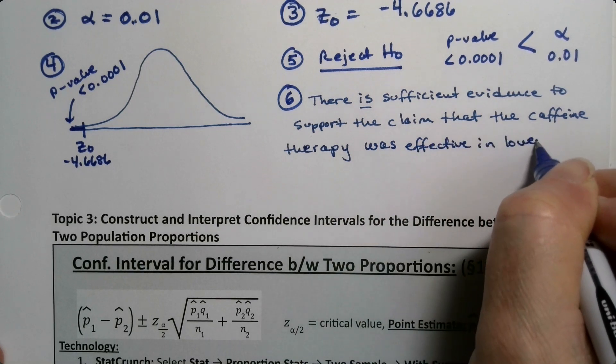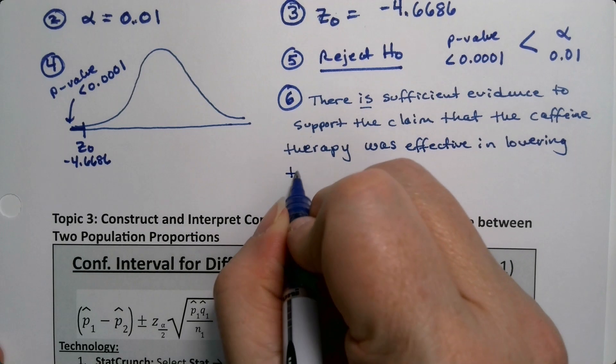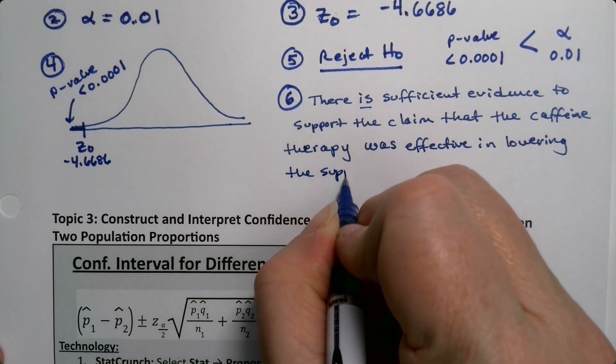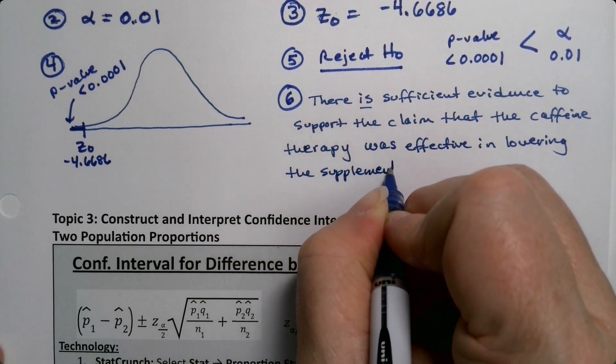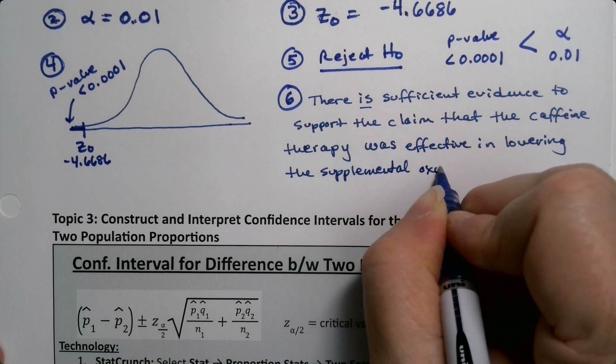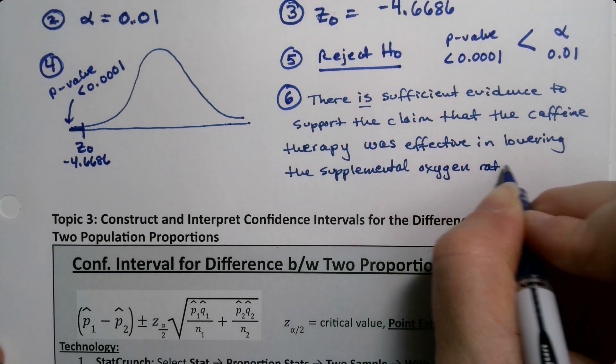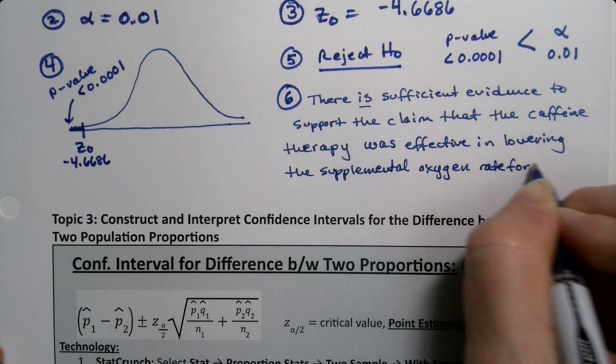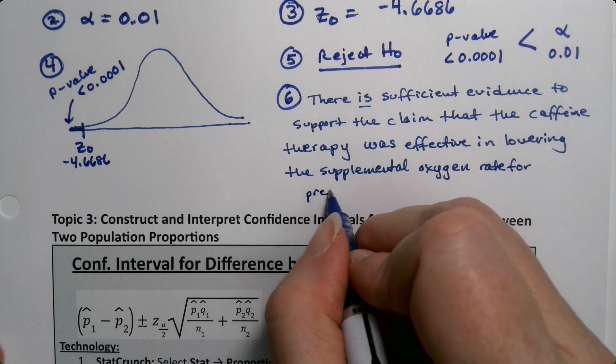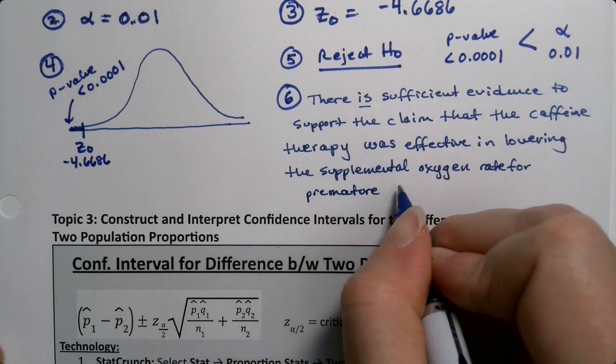So that the caffeine therapy was effective in lowering the supplemental oxygen rate for premature infants, because this of course was just talking about premature infants, it's not about any other groups.